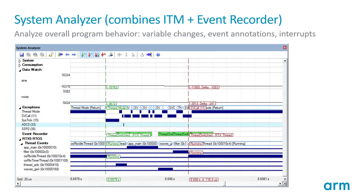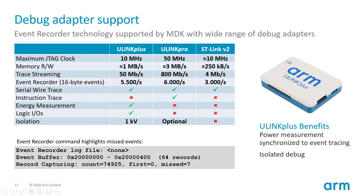The system analyzer window combines ITM and event recorder events together. It can also show power consumption from a debug unit, allowing you to measure timing between different events in context, see overall system reaction, and analyze what is happening across a complete complex system from an event perspective.